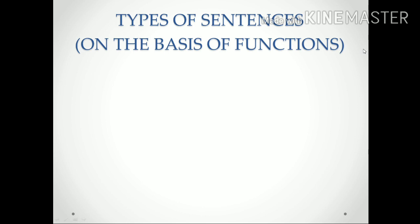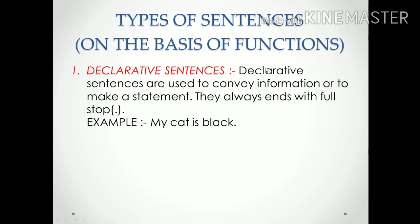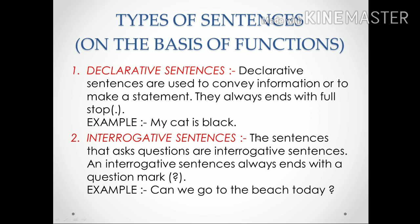Types of sentences on the basis of function. First, declarative sentences: declarative sentences are used to convey information or to make a statement — simply, anything we say or convey becomes our declarative sentence. It ends with a full stop. Example: 'My cat is black.'